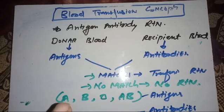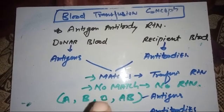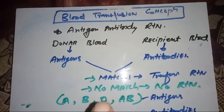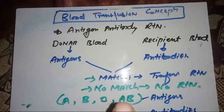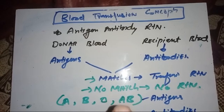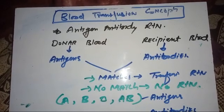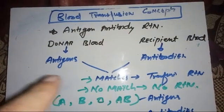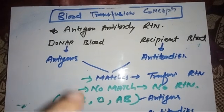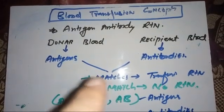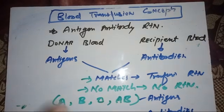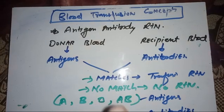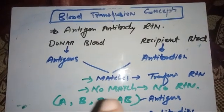Group A is called A because it has A antigen. Group B has B antigen. O is actually zero — it has no antigen, that is why it is called O. AB has both A antigen and B antigen. Whatever antigen a blood group has, it has no antibody against that antigen. So A has no antibodies against A, B has no antibodies against B, O has no antigen so it has antibodies against both A and B, and AB has both antigens so it has no antibodies at all.